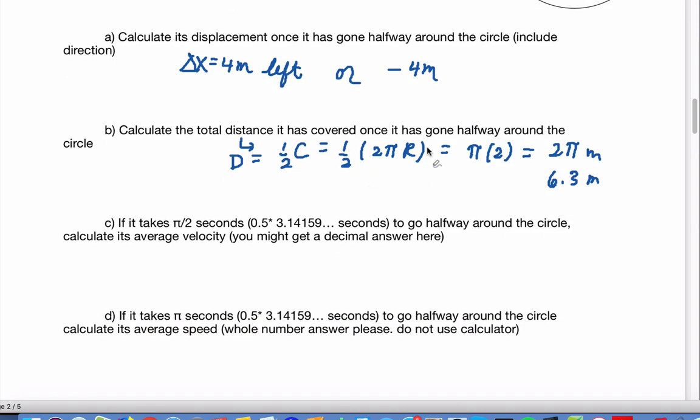Now it says it takes pi over two seconds to go halfway around the circle, so we want the average velocity. That's going to be delta x over the time.